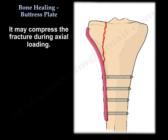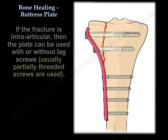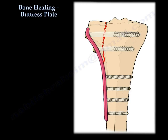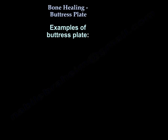In fact, the plate may compress the fracture during axial load. And if the fracture is intra-articular, the plate can be used with or without lag screws, which are usually partially threaded screws. Here are several examples of buttress plate.